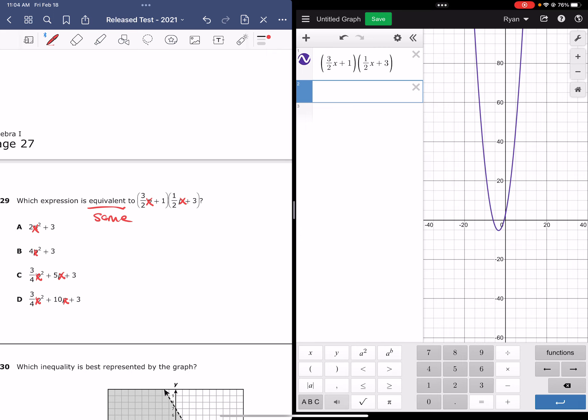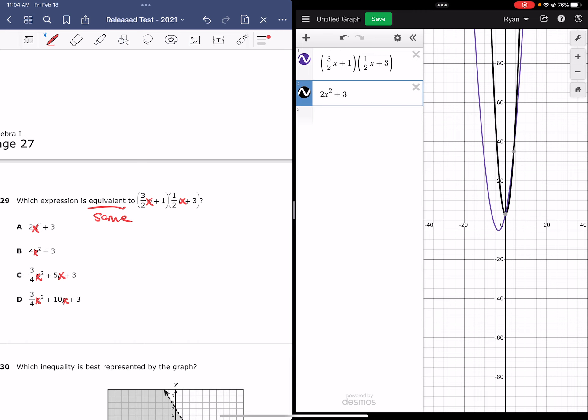If I start with my first answer choice, I will type in 2x squared plus 3. Notice that we do not have the same graph here. This purple is not the same as the black. And so therefore, letter A is incorrect.